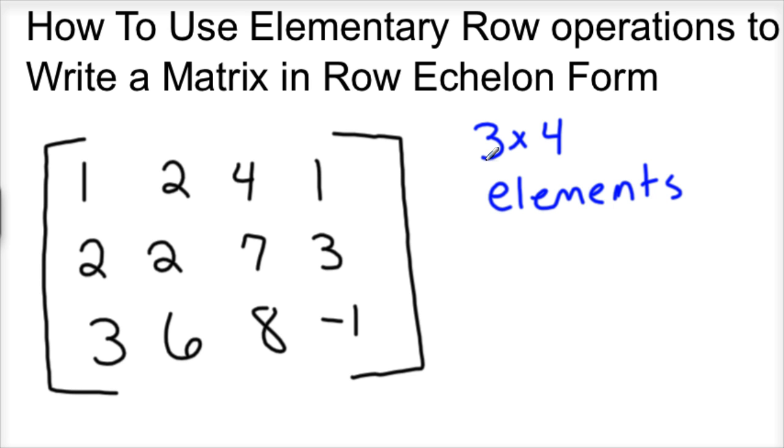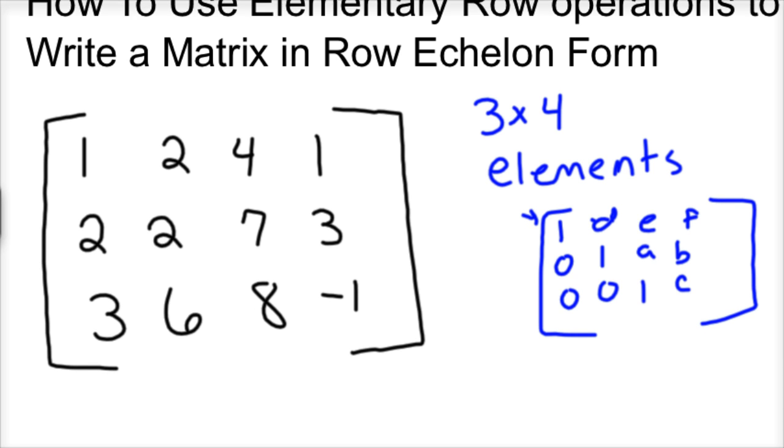Row echelon form is when you have a matrix, so let's say we're going to get this matrix in this form. So you'd have 1, 0, 0, and then some number, whatever it is. And then a 1 here, then a 0, then a 1 here, and then your numbers. We don't know what those are going to be. But this would be row echelon form. So we have a set of 1s in the diagonal starting on the upper left here and going towards the bottom right. And so that's what we want to do.